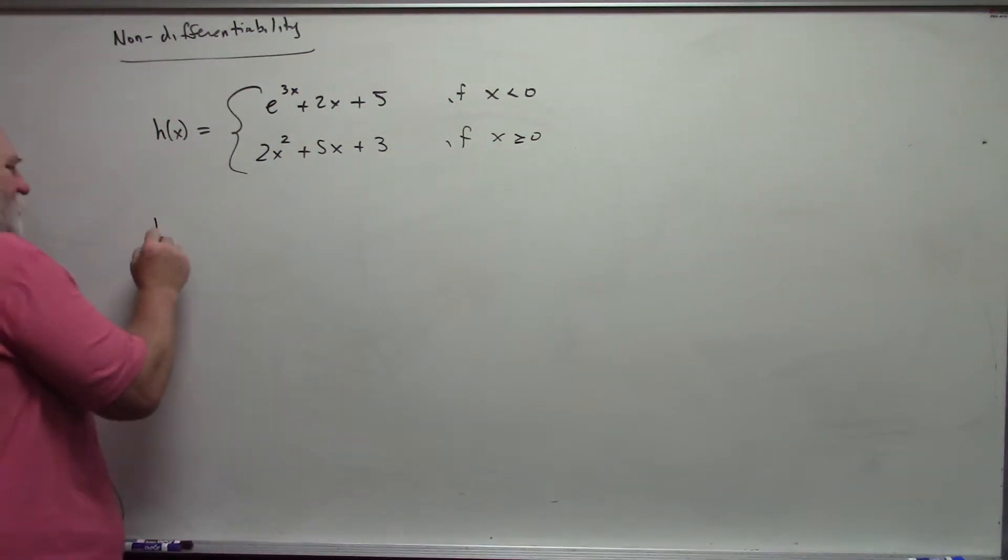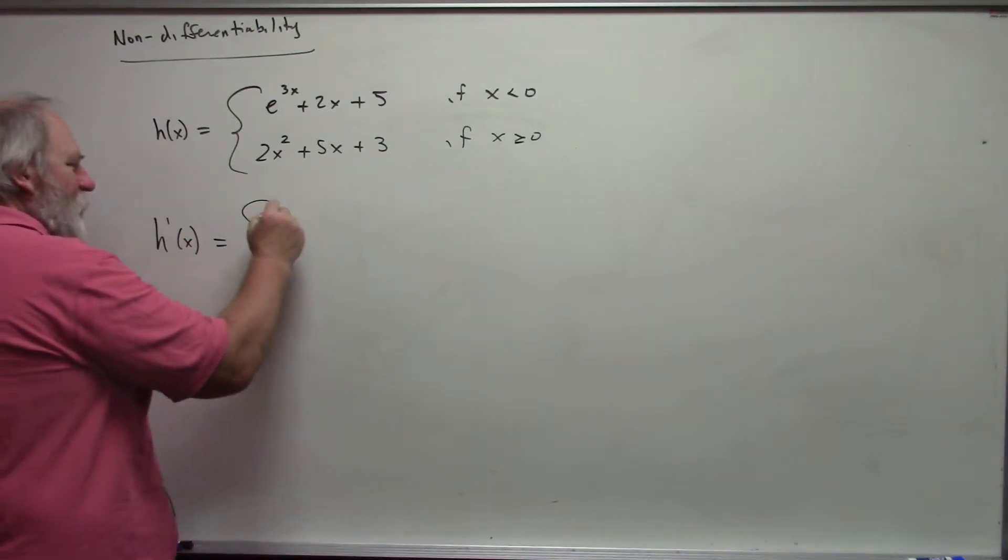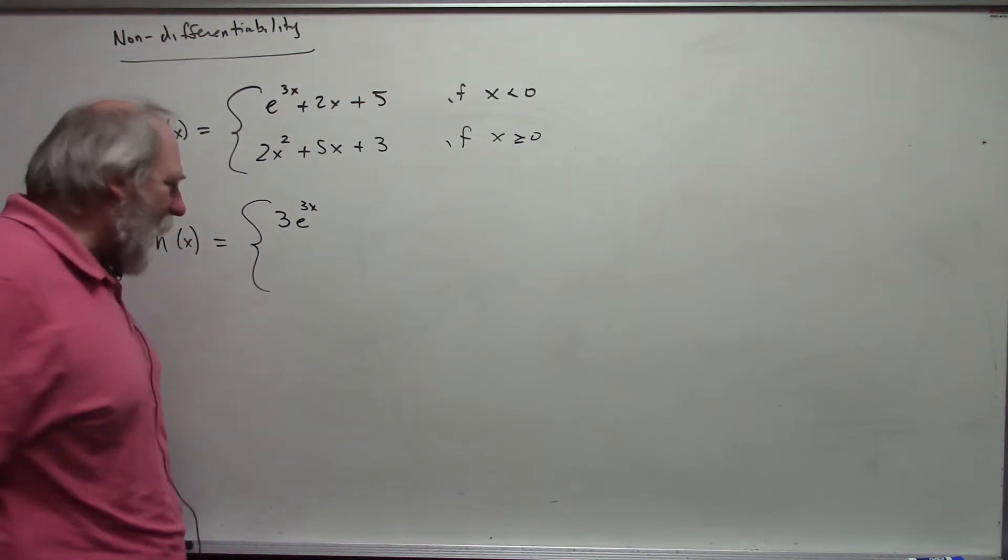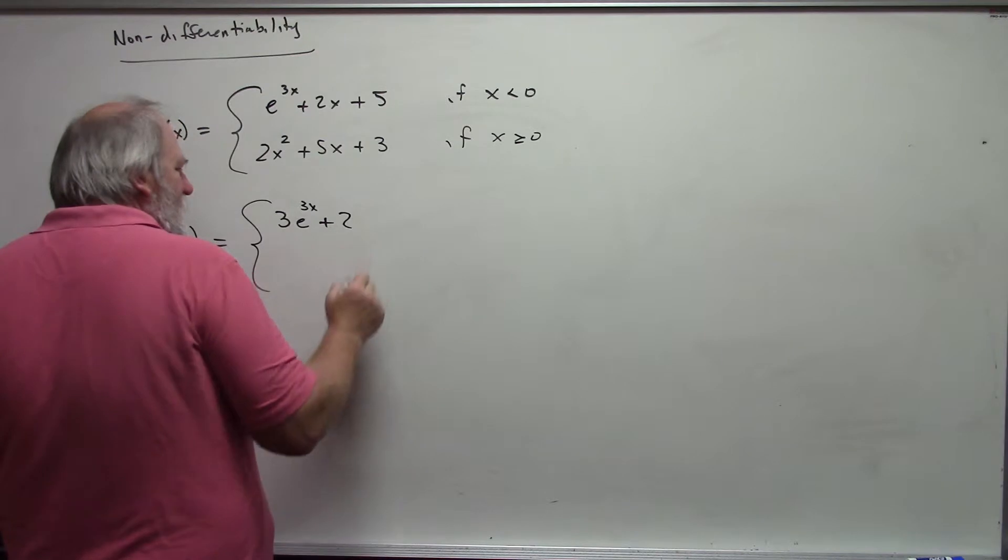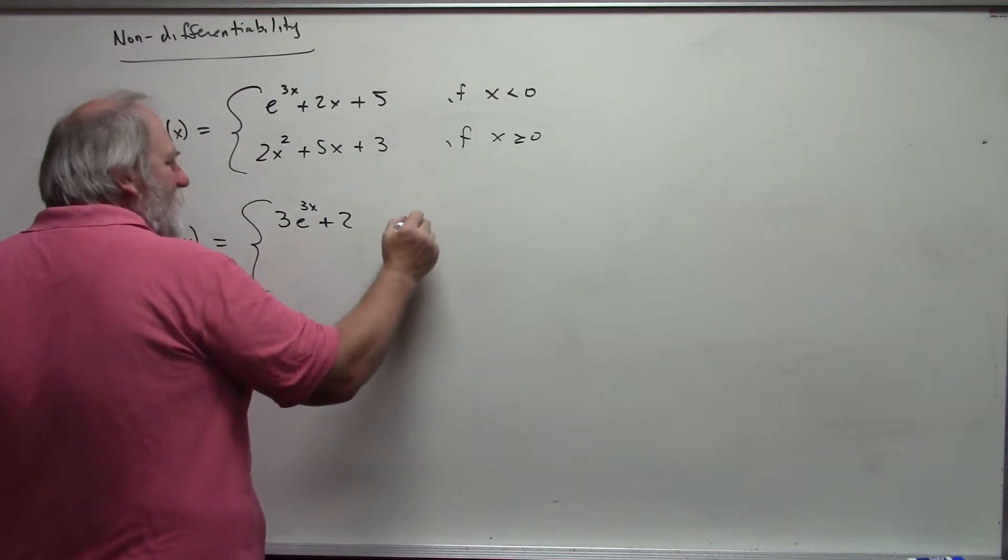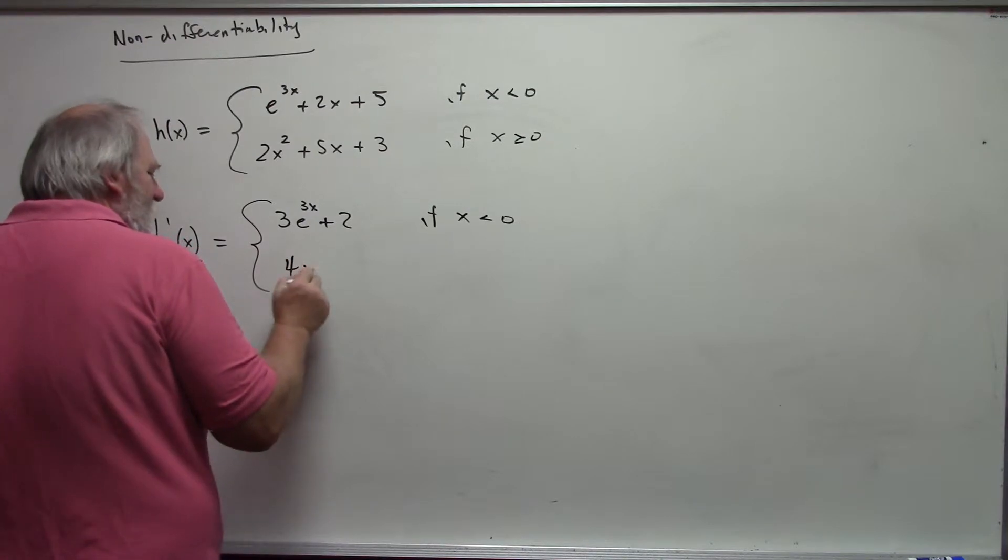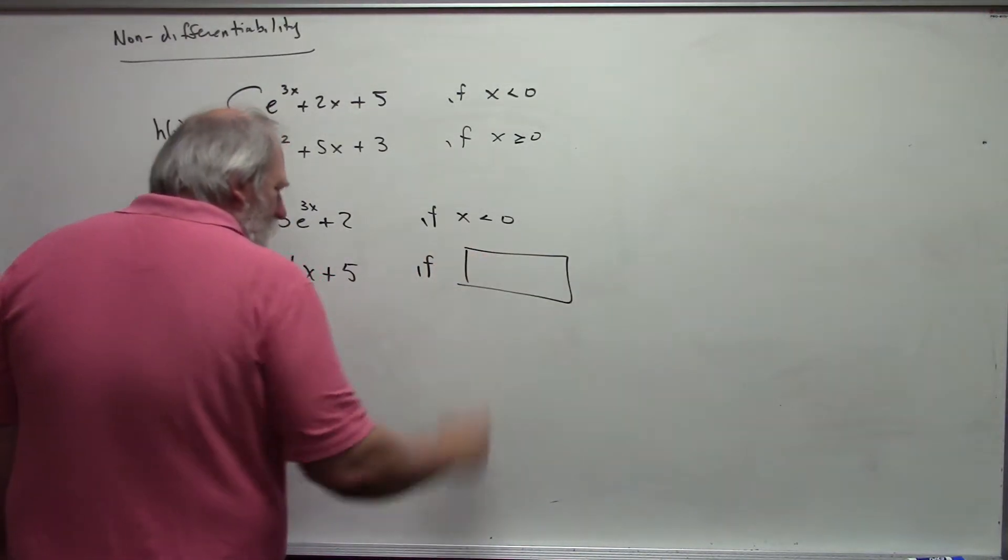Now, its derivative, which you're going to have to trust me on for the moment since we don't have ways of finding this yet, is 3e to the 3x plus 2 if x is less than 0, and this would be 4x plus 5, and the point is what goes here.